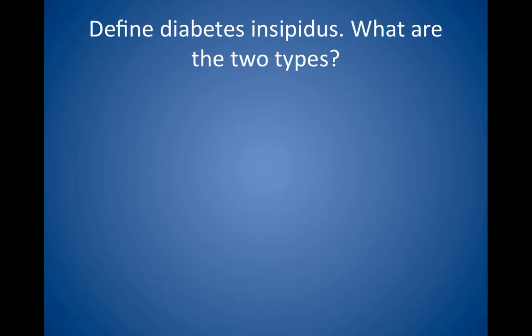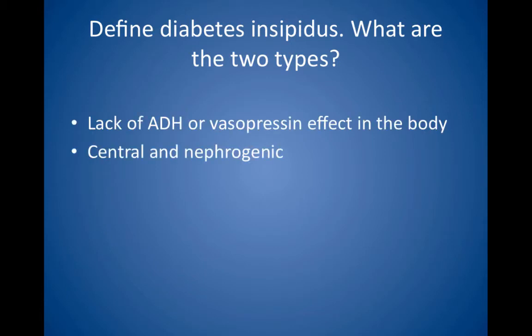Define diabetes insipidus. What are the two types? Diabetes insipidus is a lack of antidiuretic hormone (ADH) or vasopressin effect in the body. Patients with diabetes insipidus secrete inappropriately dilute urine because of the lack of ADH effect, and they may urinate up to 25 liters per day, resulting in dehydration and hypernatremia. Such patients die rapidly if they are unable to drink water. Normally, when the body is dehydrated, ADH causes urine to become highly concentrated through retention of free water. In diabetes insipidus, the urine remains dilute even though serum osmolarity is quite high. The two types are central and nephrogenic.